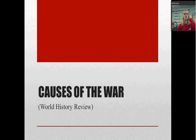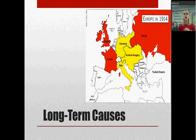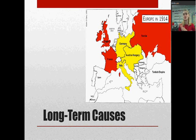So let's jump into the causes of the war. In a lot of ways, this is kind of world history review, so you should have a good idea of this already and we're going to go through it quickly. The first thing you will notice is the long-term causes spell out the word MAIN: M-A-I-N — Militarism, Alliances, Imperialism, Nationalism. So you can also call these the main causes of the war.